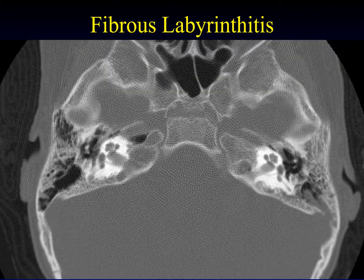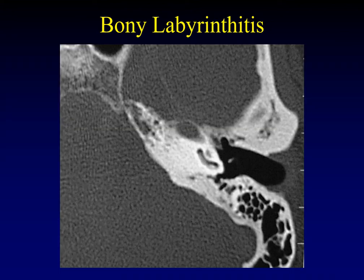Here's the fibrous stage on CT — it looks totally normal. You can't see the fibrous stage on CT. Once you get to the bony stage, CT comes to the fore. Instead of a nice banana or gherkin shape of the basal turn of the cochlea, here you can see only the anterior half is still patent. The posterior half is starting to fill in with bony material — abnormal calcium filling that in — and this is a progressive disease that will eventually fill it all in.